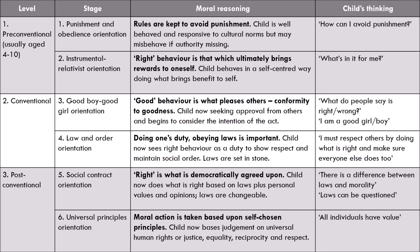Stage four is law and order orientation — doing one's duty and obeying laws is important. The child now sees right behaviour as a duty to show respect and maintain social order. Laws are set in stone; the laws we set out in society to keep it functioning are internalised as a code of conduct. In order to be respectful, I will maintain that code of conduct and it will maintain social order. The child's thinking in this stage is: 'I must respect others by doing what is right, and make sure everyone else does too.'